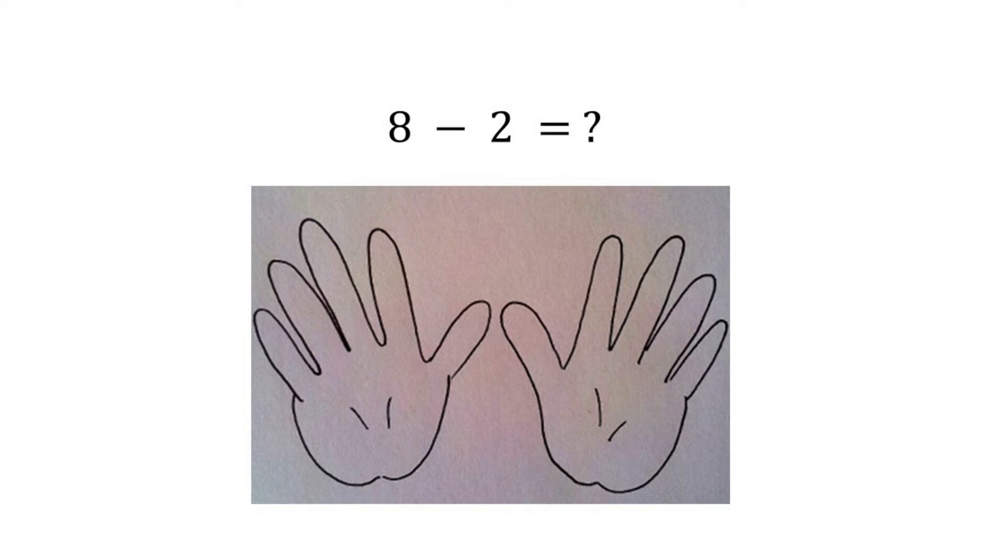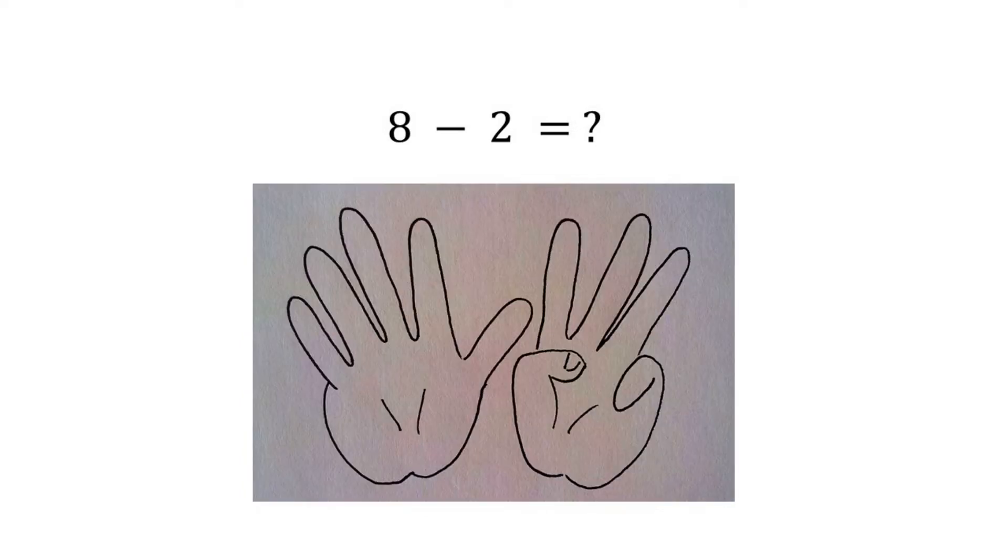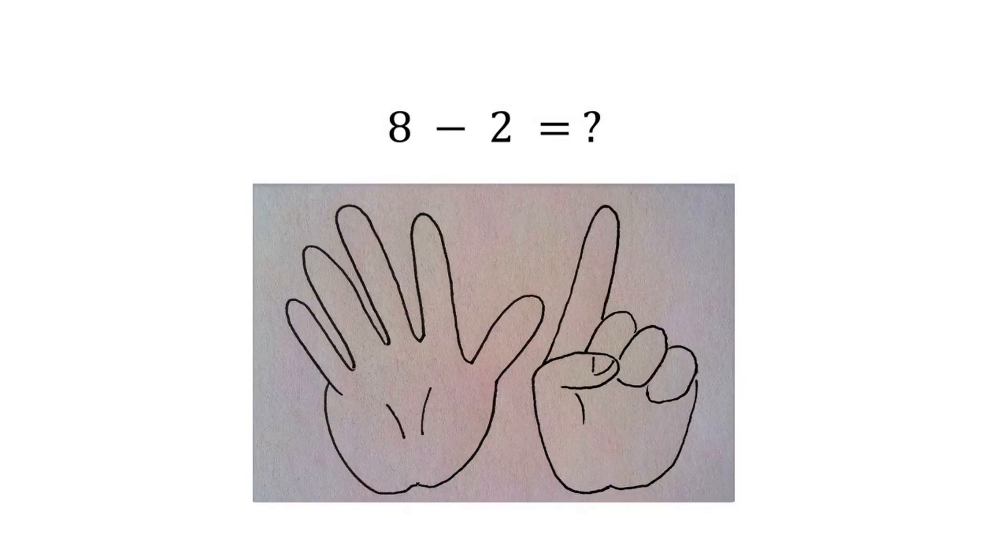To show 8 minus 2, start with 8 fingers and have students count the fingers you show: 1, 2, 3, 4, 5, 6, 7, 8. Next, take away 2 fingers by folding down 2 fingers: 1, 2.